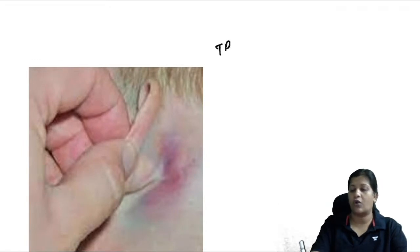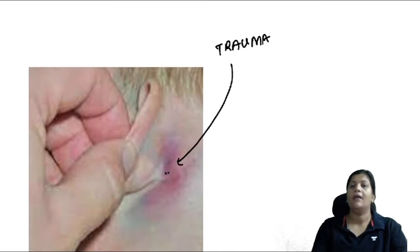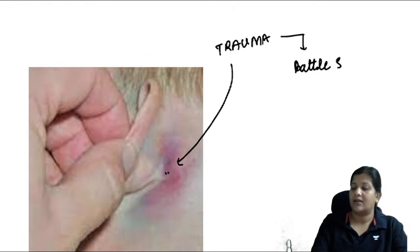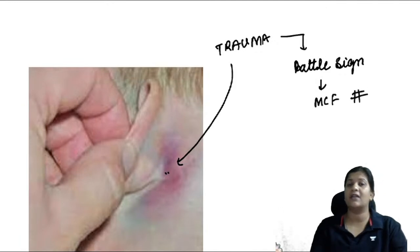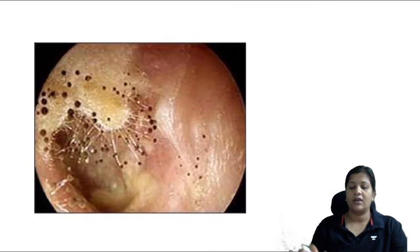After trauma, if you see a bluish discoloration over the mastoid, this is Battle sign, indicating a middle cranial fossa fracture.